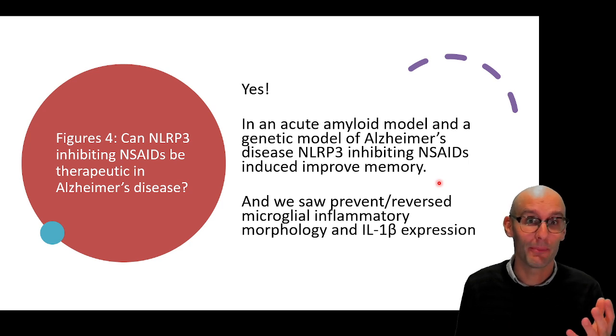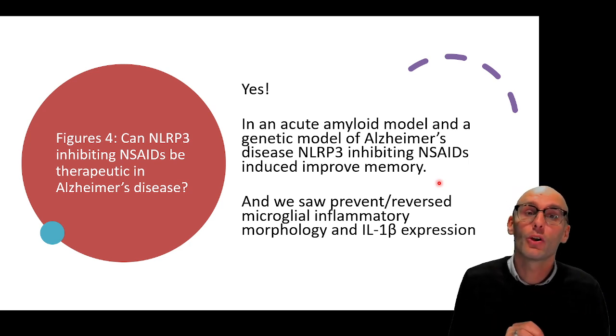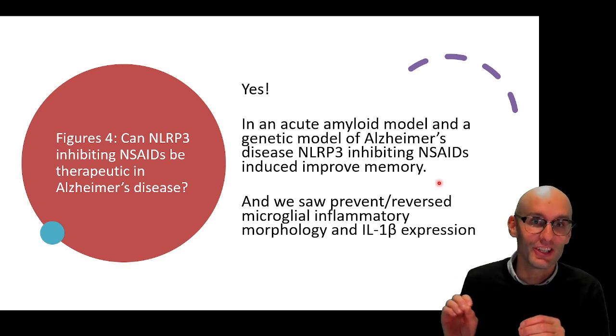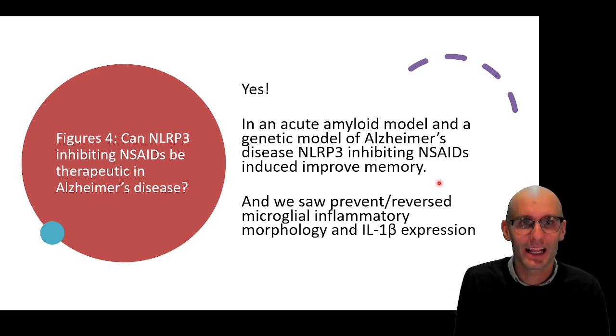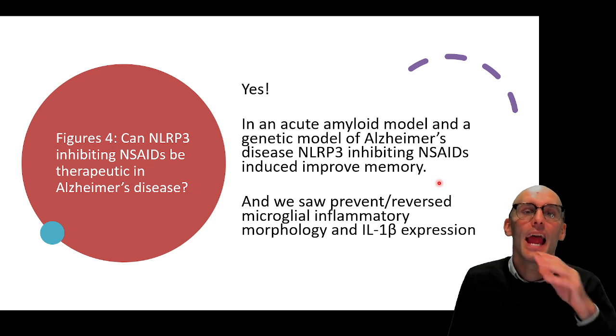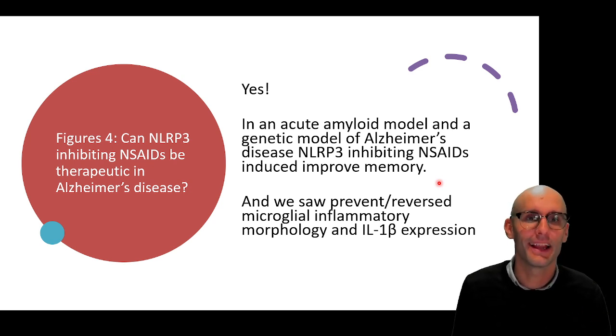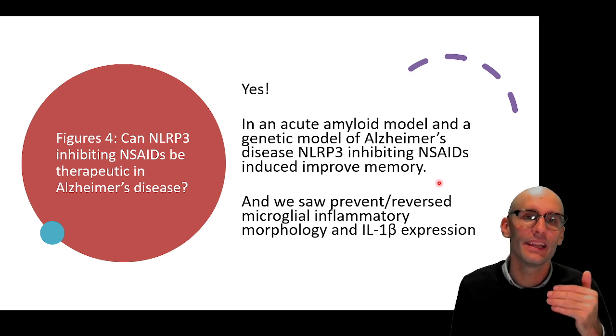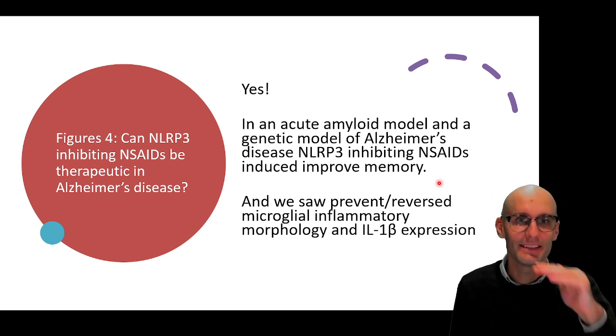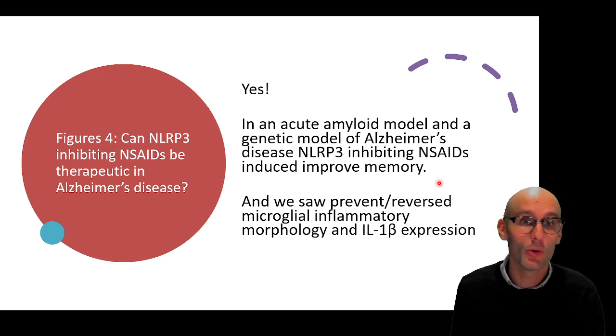I will say, I then released another paper, which is really, really cool, where it's like, these are existing drugs. So why don't we go look in the population to see if people who are taking the NLRP3 inhibiting NSAIDs have a slower Alzheimer's decline. And indeed, that's exactly what we found. People who were taking ibuprofen with Alzheimer's disease had a regular normal progression of the disease compared to someone who wasn't taking ibuprofen. They had the exact same progression.